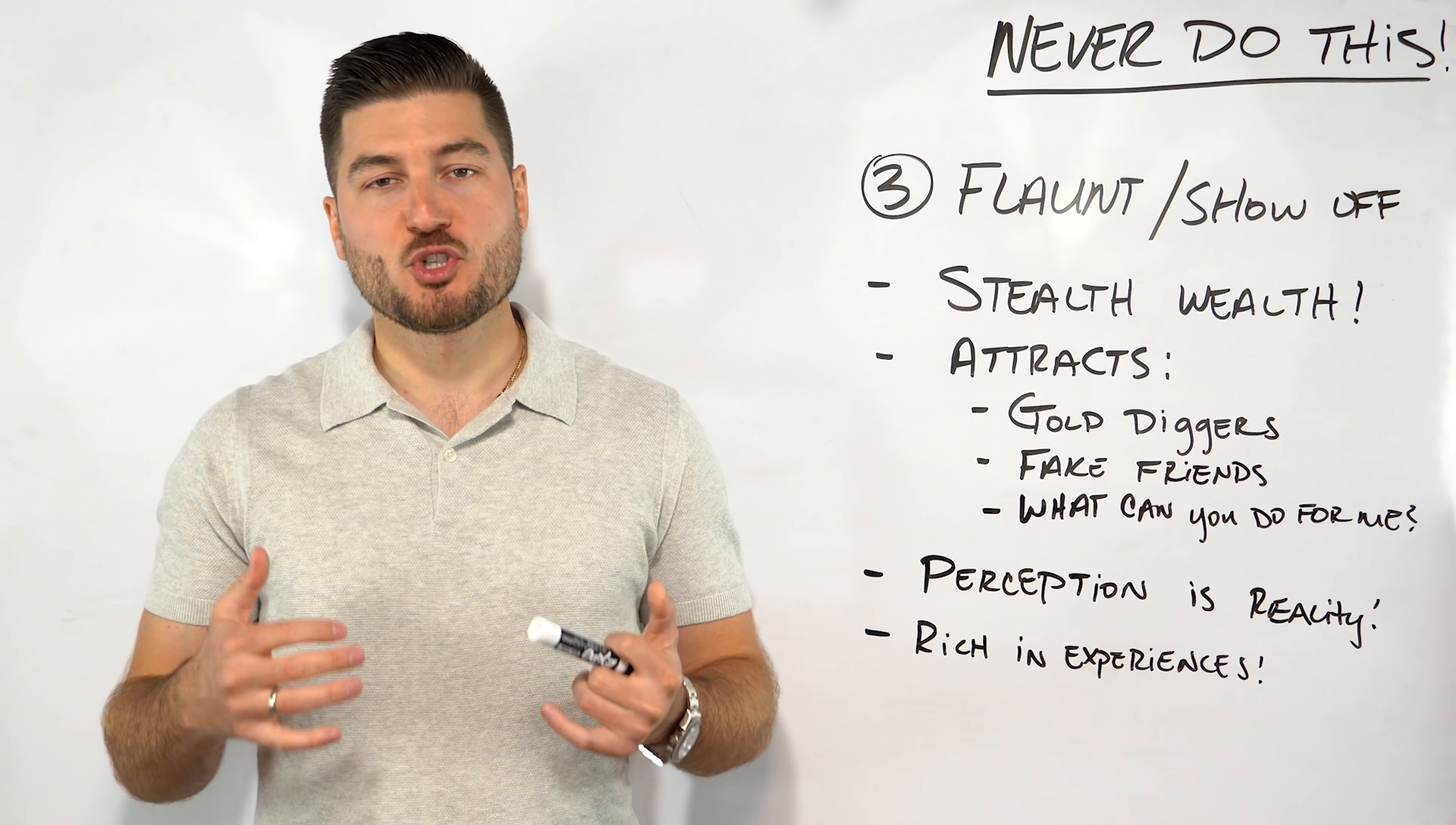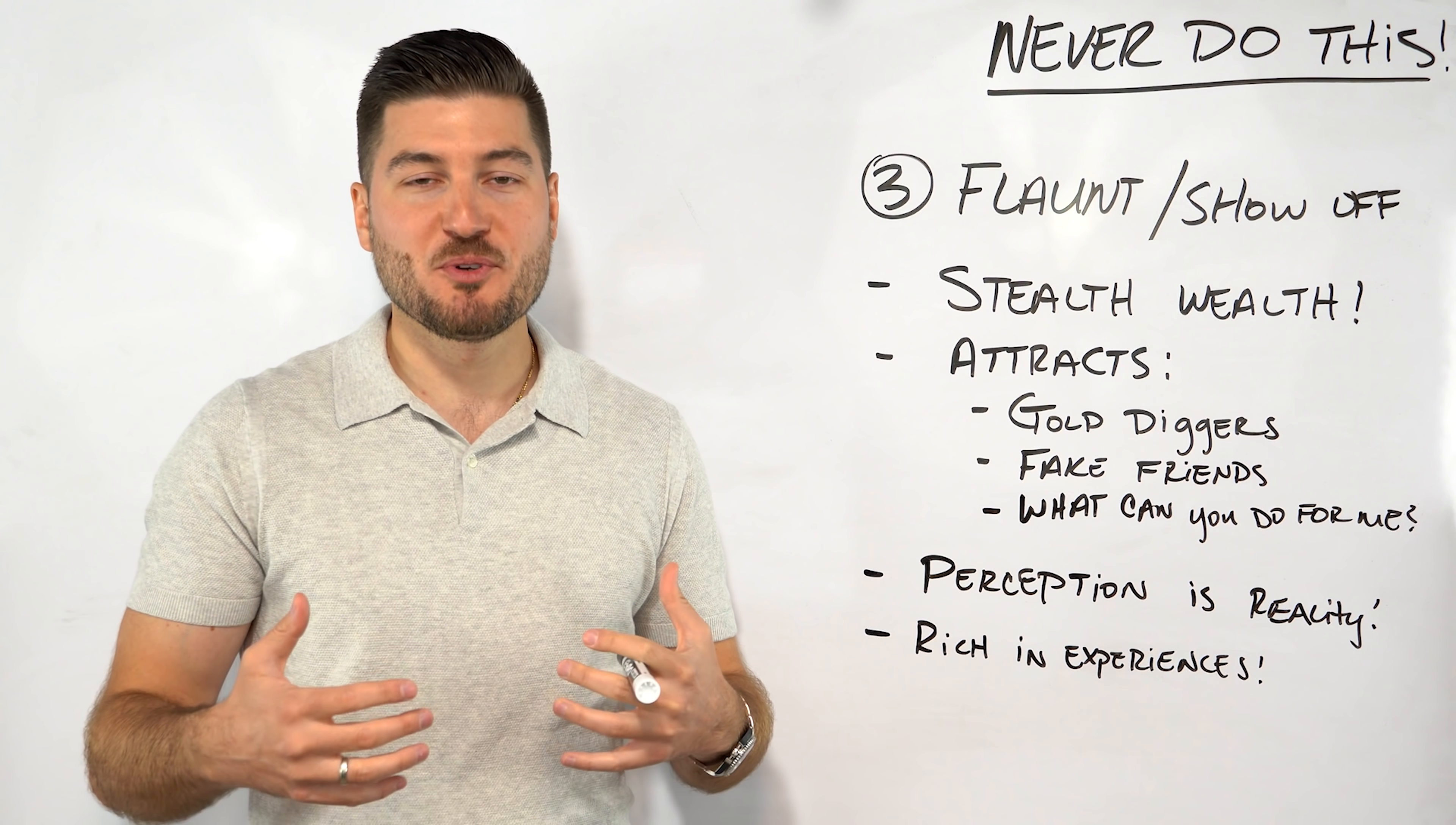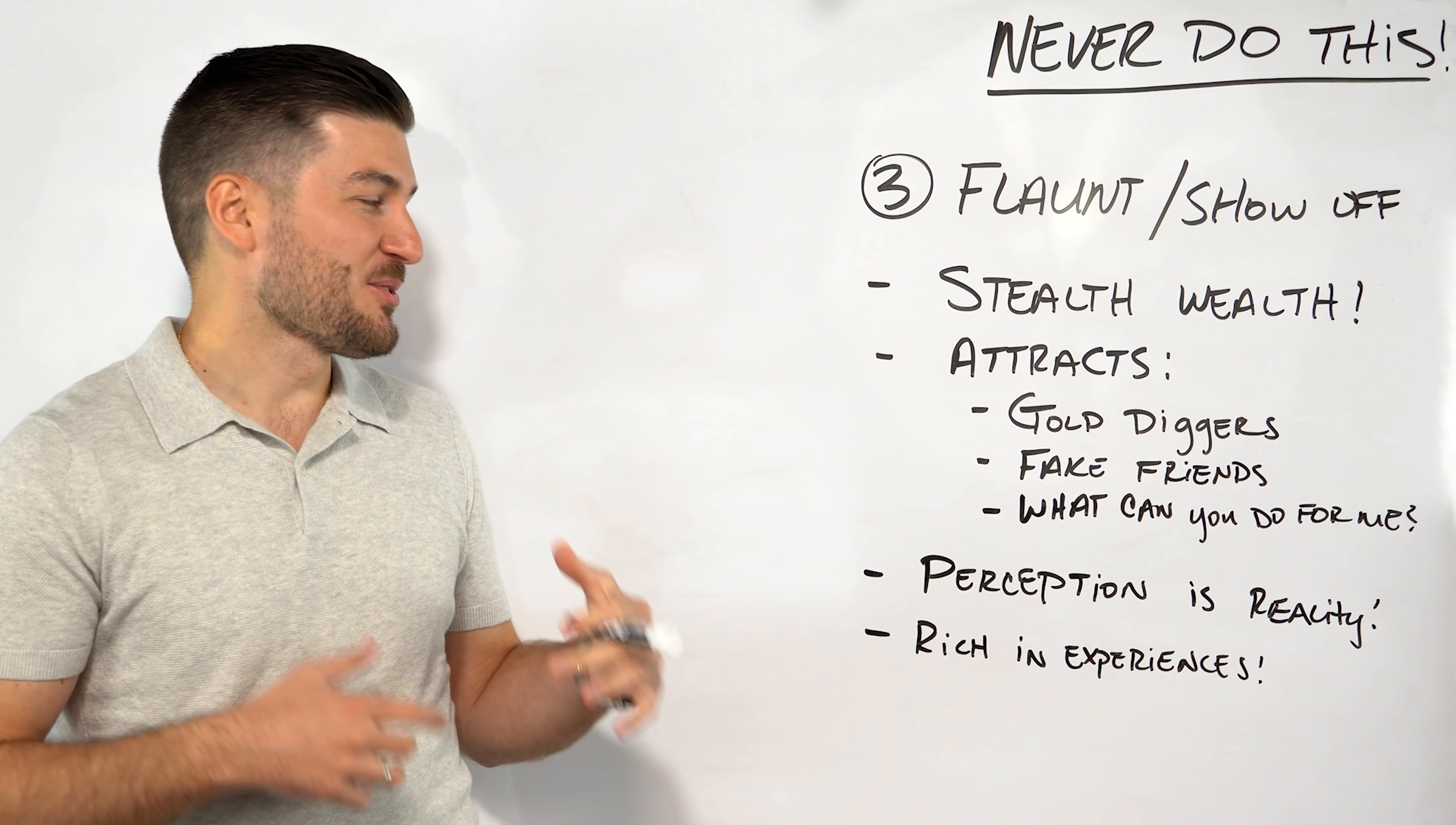Number three is never flaunt your money or don't show off your riches or wealth. Stealth wealth is the way. The reason for this is because it attracts the wrong things in life. The first couple things we talked about were more defensive, like don't play the lottery, save your money. This is going to fix your offense. Don't be too offensive with showing off your money. It attracts the wrong things in life. It attracts gold diggers, people that are only interested in being with you because you have money. It attracts fake friends. You're the guy that's always paying for bottle service when you go out, always buying everyone dinner. But when that money dries up, those friends leave. It creates that what can you do for me attitude.